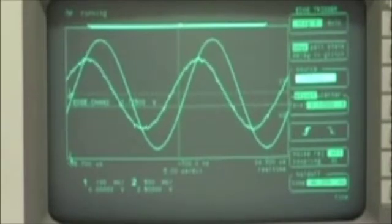The internal gain of this isolation amplifier is 8. So with the input of plus or minus 200 millivolts, one would expect an output voltage of 1.6 volts peak to peak.